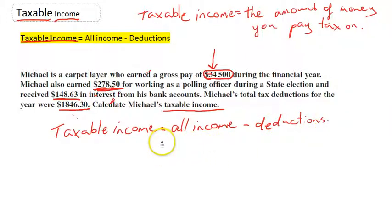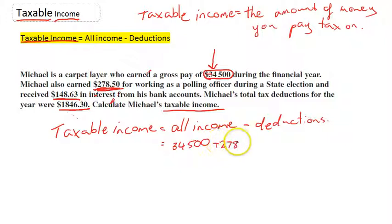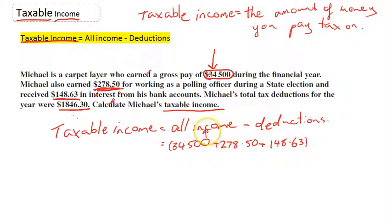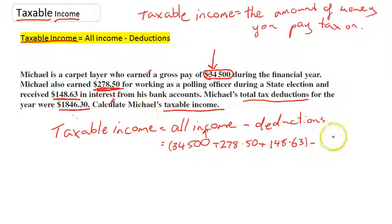That's going to be equal to: he earned $34,500, he also earned $278.50, and he also earned $148.63. Now that was his income — all this is the income. Very handily, they've told us that his total tax deductions — remember in our previous videos we were learning all about tax deductions — his total tax deductions were $1,846.30.